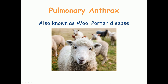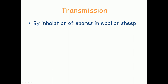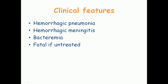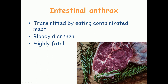The other form of anthrax is pulmonary anthrax, also known as wool porter disease. This is because people who work in industries dealing with the wool of sheep infected with anthrax are more prone to get this form. The transmission is by inhalation of spores present in the wool of infected sheep. The clinical features include hemorrhagic pneumonia, hemorrhagic meningitis, and bacteremia — the presence of bacteria throughout the blood — and this can be fatal if untreated.